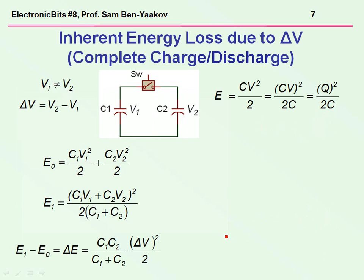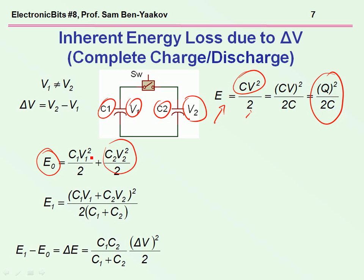Now, what about the losses? In physics books you'll find this type of analysis. We start with two capacitors which are charged to different voltages, V1 and V2. Now, going back to the basics of physics, energy stored in a capacitor is CV squared over 2, or Q squared, this is the charge, over 2C. Now at the beginning, the energy stored in the system is C1V1 squared over 2 plus the energy of the second capacitor. This is the initial energy.